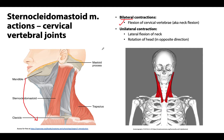If only one sternocleidomastoid muscle is contracting — unilateral contraction — there will be lateral flexion of the neck on the contracting side. For example, if the right sternocleidomastoid is contracting, the head will tilt to the right side, toward the right shoulder region. Rotation can occur as well, with the head turning superiorly toward the opposite side — so the right SCM contracting would rotate the face to the left. Think of tilting your head to your shoulder and pointing your chin upward.